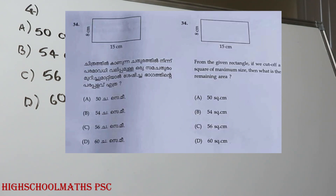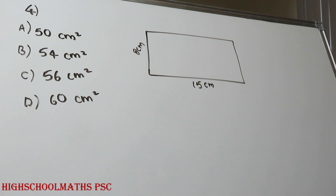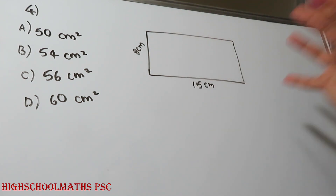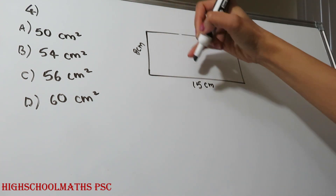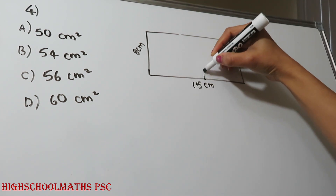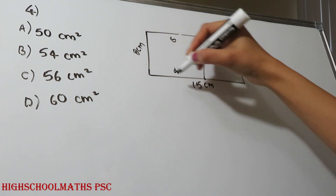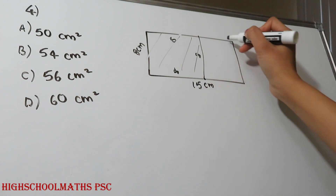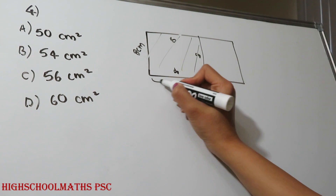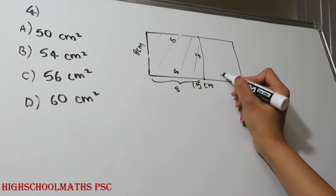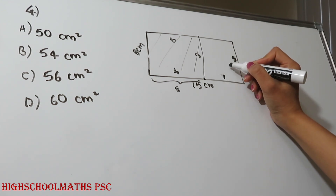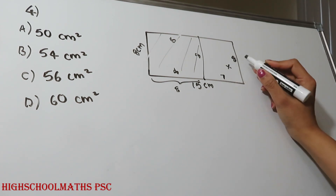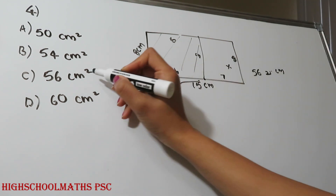From the given rectangle, if we cut off a square of maximum size, what is the remaining area? The rectangle has dimensions, and we cut a square of side 8. After cutting, we have the remaining piece. The total was equal to 15, and 15 minus 8 gives the remaining area. 8 times 8 is equal to 8. The answer is option C.